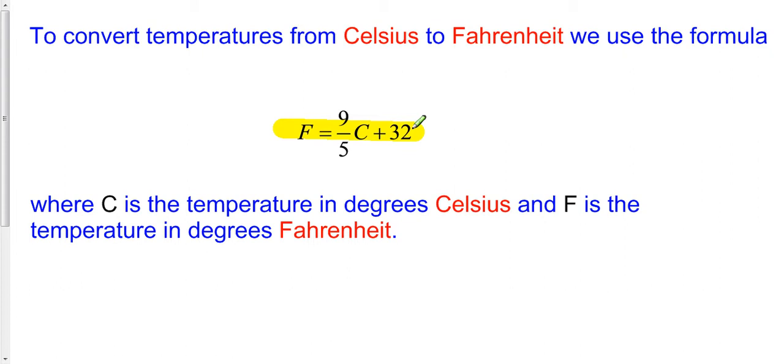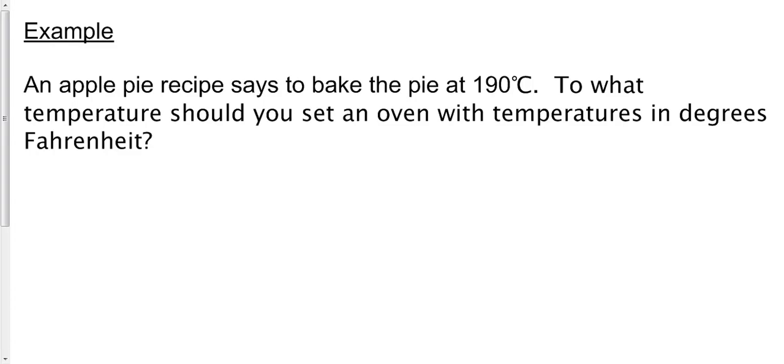So let's do an example. Let's say we have an apple pie recipe, and it says to bake the pie at 190 degrees Celsius. But we don't have an oven in degrees Celsius. We have an oven that has temperatures in degrees Fahrenheit. So to what temperature should you set an oven with temperatures in degrees Fahrenheit?